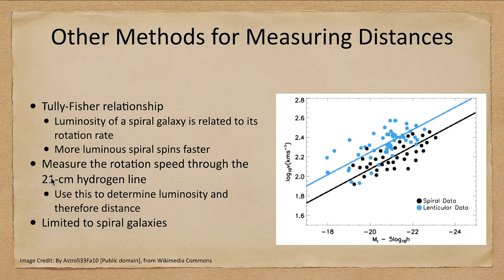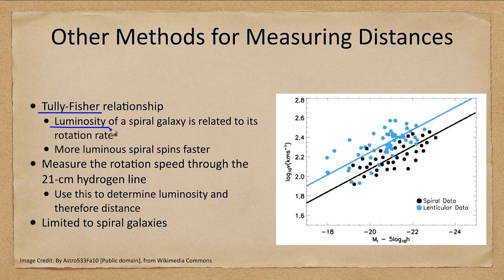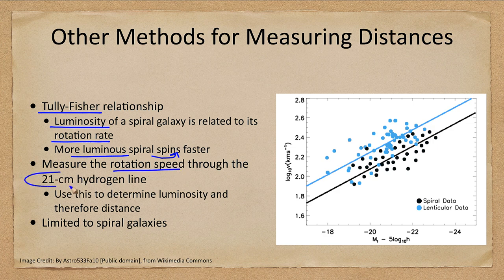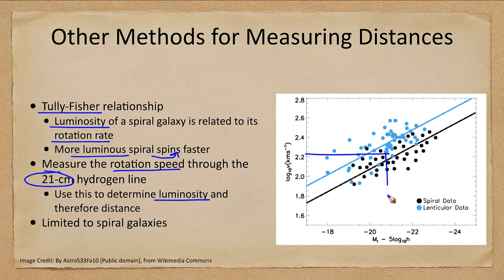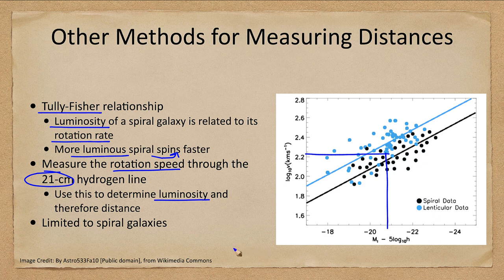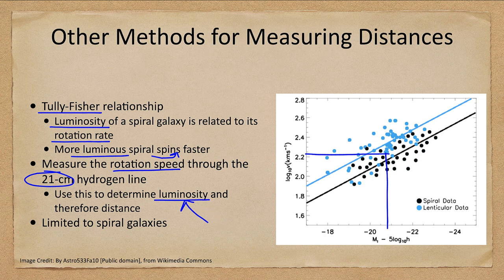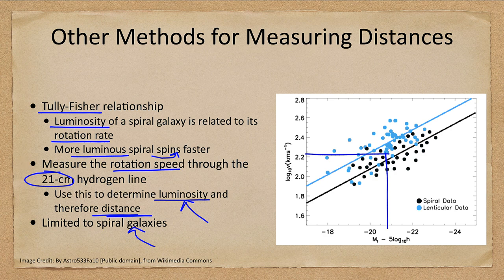Now let's look at some other methods that are used to determine distances. For disk galaxies, we use the Tully-Fisher relationship, which says that the luminosity of a spiral galaxy is related to its rotation rate. More luminous spirals will spin faster. So we can measure this rotation speed through the 21 centimeter hydrogen line, use this to determine the luminosity from our chart. We measure the rotation, and then we can determine from that what the magnitude would be. Once we know a luminosity, then we can see it, then we can determine its apparent and absolute magnitudes. And that gives us the distance. However, it is limited to spiral galaxies. So we cannot use this method for ellipticals.